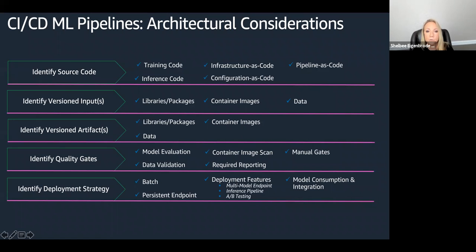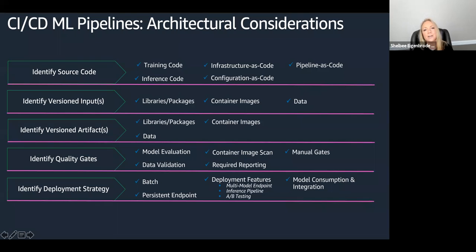You also want to look at making sure you're still doing the train-once-deploy-many strategy. Similar to DevOps practices where you do build-once-deploy-many, you want to do the same for your machine learning workloads — training once, taking that model artifact, and ultimately deploying it to one or more target environments. You don't want to retrain across target environments, not only for cost reasons since models can train for hours or days, but also for ensuring consistency and reliability.